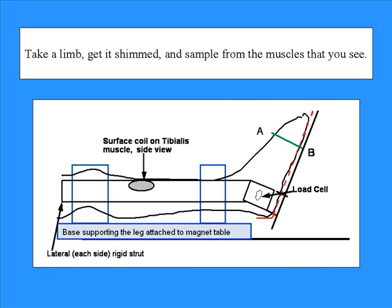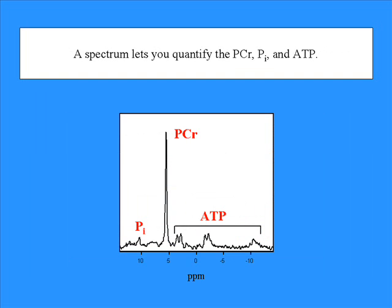Take a limb, get it clipped, and sample from the muscles that you see. Got my mind on my muscle, and my muscle on my mind. A spectrum lets you quantify the PCr, Pi, and ATP.